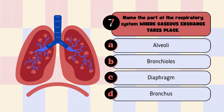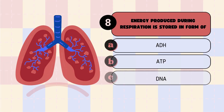Question 7: Name the path of the respiratory system where gaseous exchange takes place. A. Alveoli, B. Bronchiolus, C. Diaphragm, D. Bronchiolus.